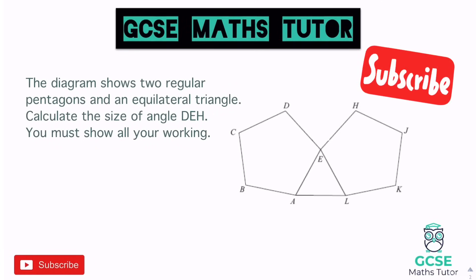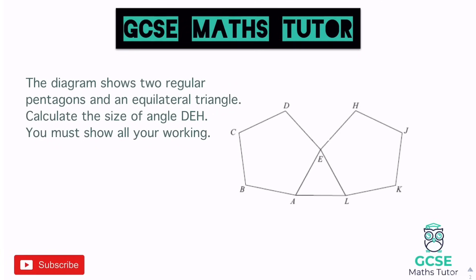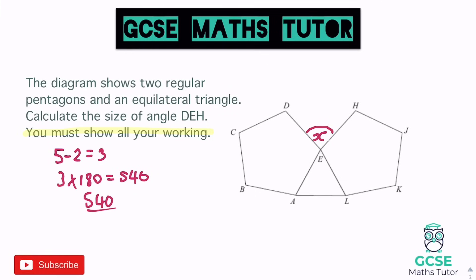This question shows two regular pentagons and an equilateral triangle. Calculate the size of angle DEH, which is this angle here - let's put an x there. You must show all your working. So for the pentagon: 5 minus 2 equals 3, then 3 times 180 gives 540, then 540 divided by 5 gives an angle of 108 degrees. That's showing your working for how you get the angle inside the pentagon.